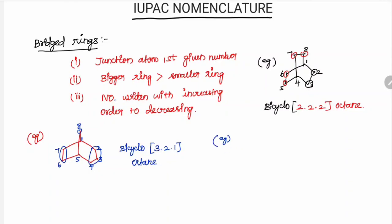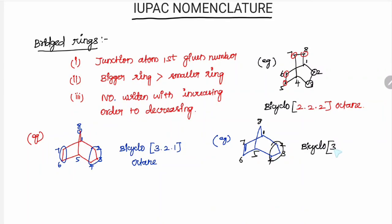Here is another important example — there is a double bond. The junction atom is identified first; after the ring, the bigger ring gets preference. Number: 1, 2, 3, 4, 5, 6, 7, 8. This is Bicyclo — here three, here two. In the bridged position one — Bicyclo[3.2.1]octane. The double bond is at the 6th position.